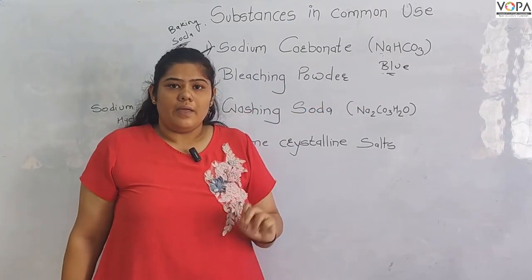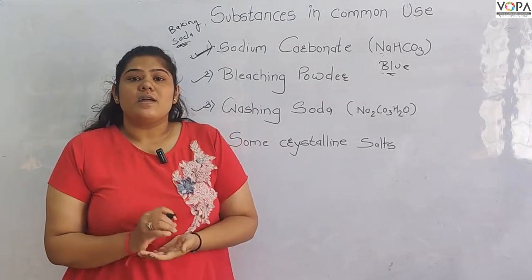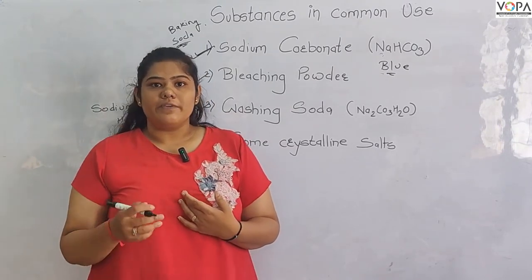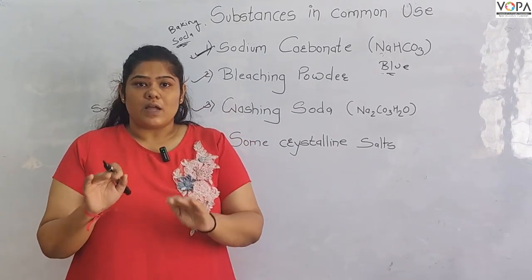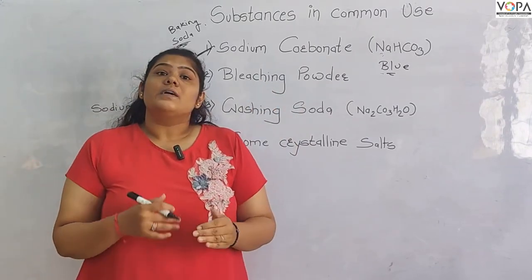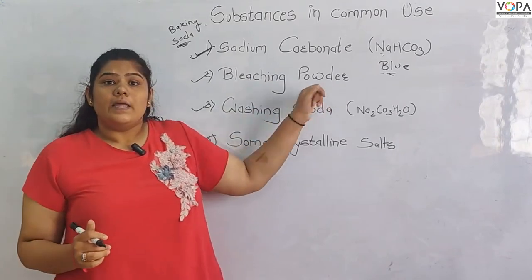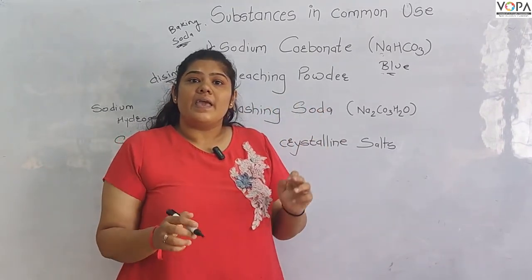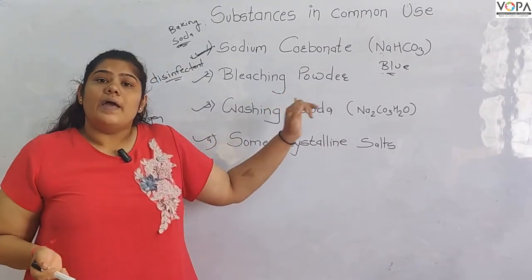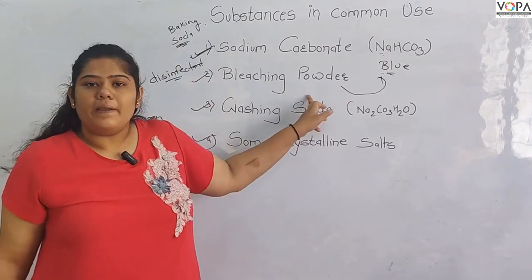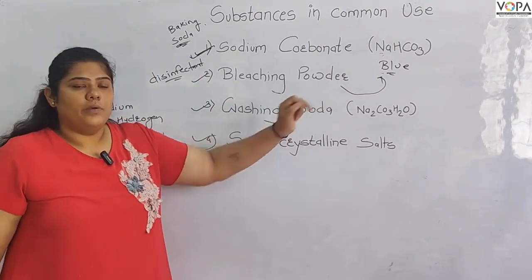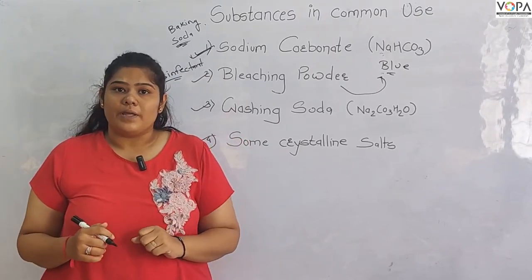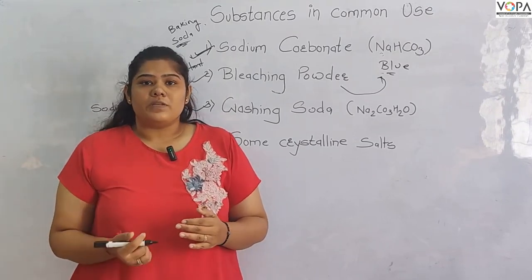We also use bleaching powder. If we use the bleaching powder, we can use it to clean water. Bleaching powder is quite useful; we can use it for water treatment. With this water, we use bleaching powder. When we use this, we have a disinfectant. Bleaching powder is basic in nature, similar to sodium carbonate.